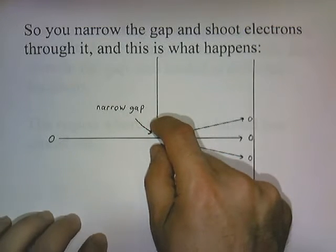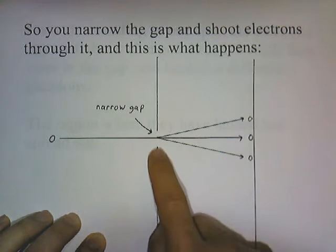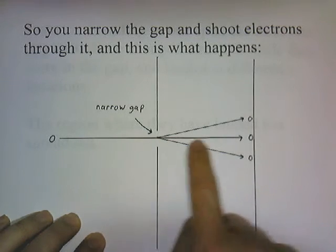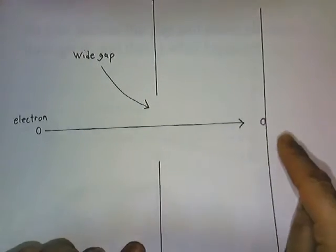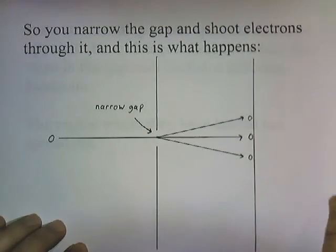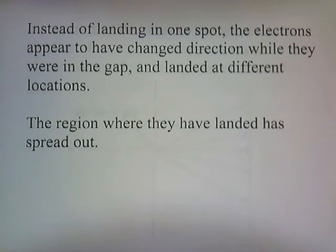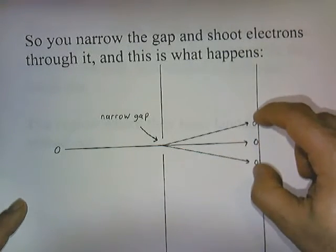We narrow the gap a bit. When the electron goes through, some of them go straight. But then you notice that some of the electrons don't go straight — they seem to deviate from the straight line path that we had when we had the big gap. So if it's a big gap, it seems to go straight. But when we narrow the gap, the electron seems to change direction. So instead of landing in one spot, the electrons appear to have changed direction while they were in the gap and landed at different locations. The region where they've landed is spread out now — a larger region where the electrons are landing.